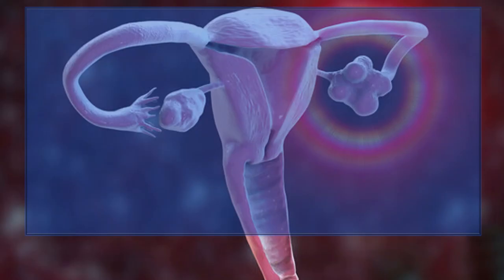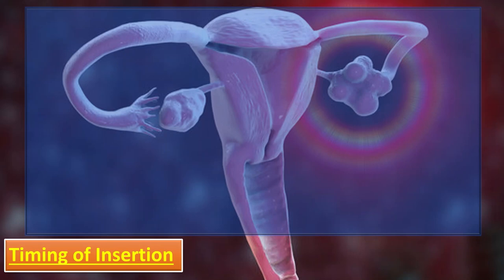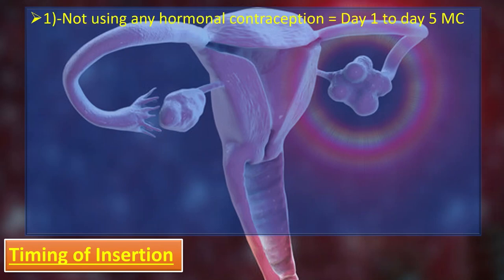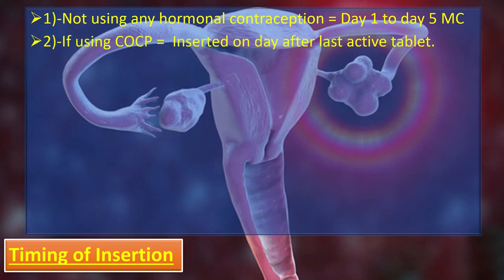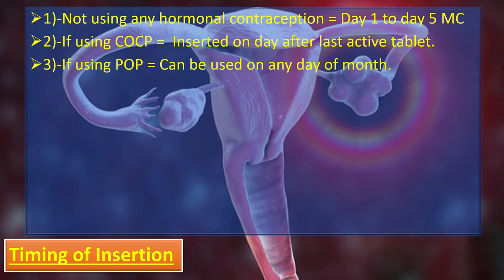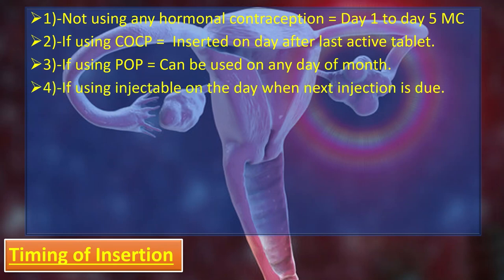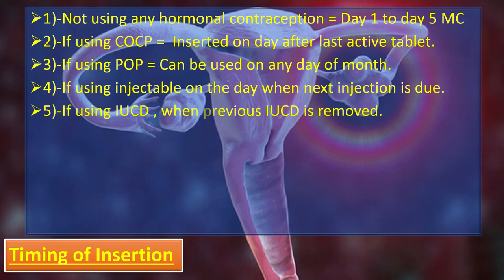Regarding timing of insertion: patients not using any hormonal contraception can use it on day one to five of the menstrual cycle. If using combined oral contraceptive pills, Implanon can be inserted on the day after the last active tablet. If using progesterone-only pill, it can be inserted on any day of the month when switching from POP. If using injectable, insert on the day the next injection is due.